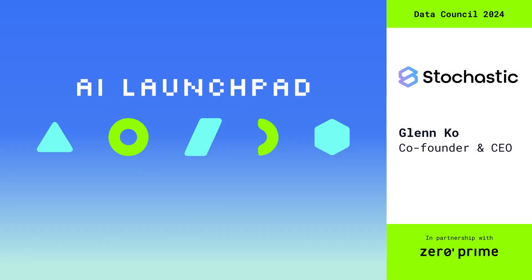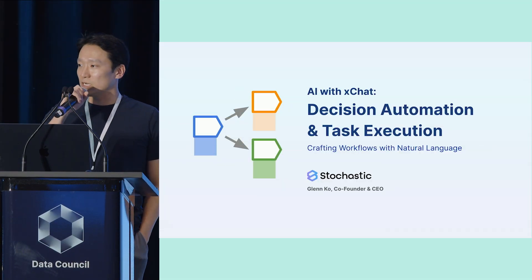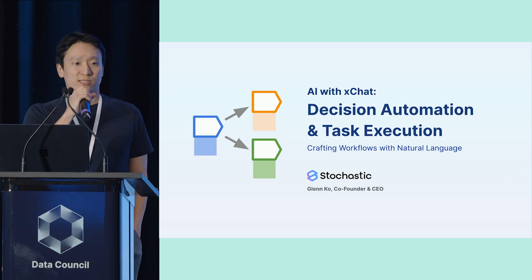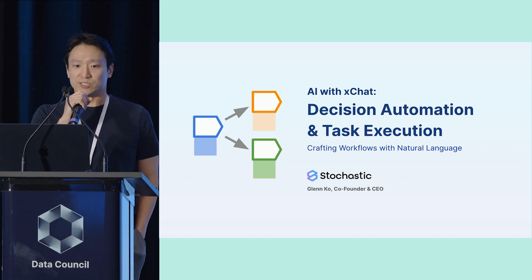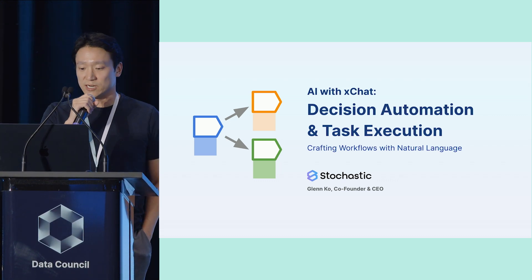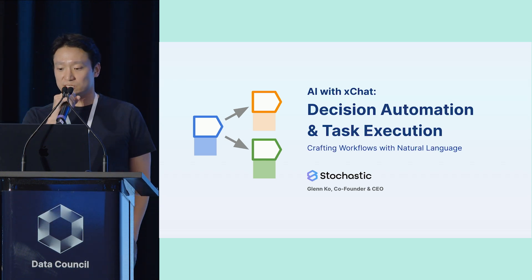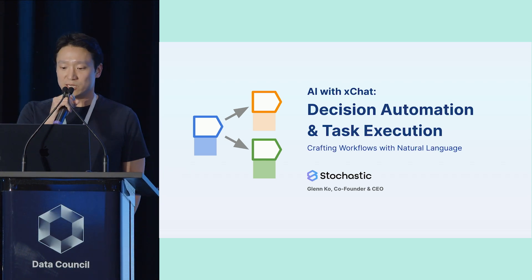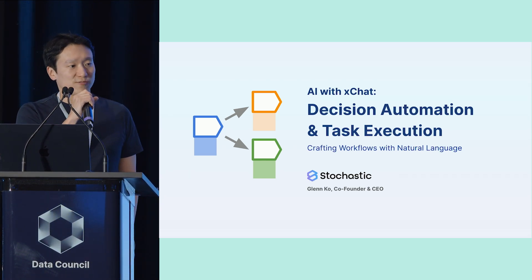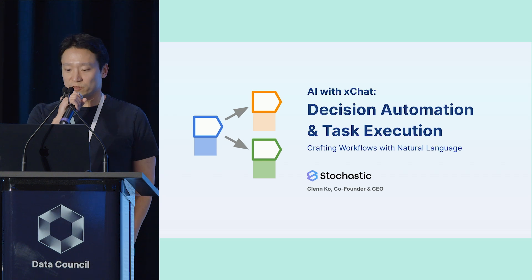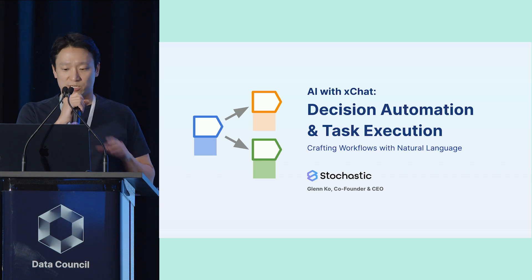Hello, everyone. My name is Glenn Ko. I'm the co-founder and CEO of Stochastic. Today I'm really excited to showcase one of our latest features on our product called XChat, focused around solving decision automation and task execution through construction of intelligent workflows using natural language.